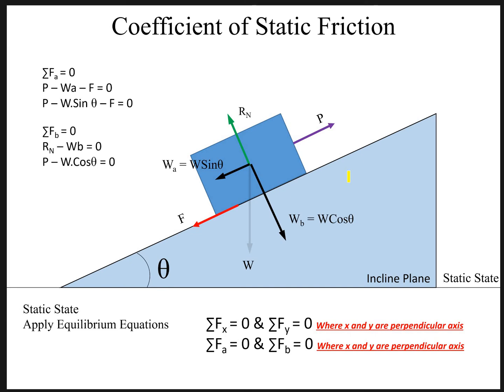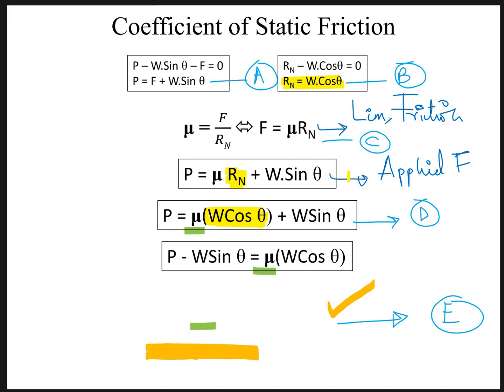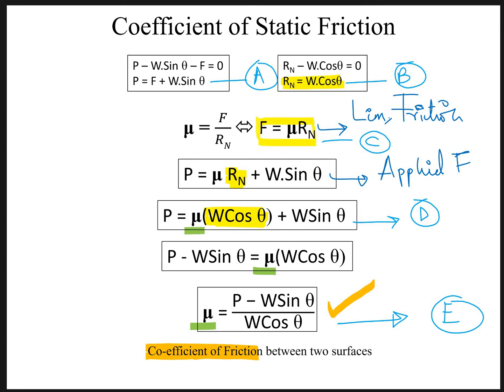When you apply the equilibrium equations and take summation of both these forces on both the axes A and B, you get these relationships. Once you get equation A and B, what you'll do is you'll take this equation C which is representing the limiting friction, F equals to μ into Rn, and you have to plug this value simply in equation A.